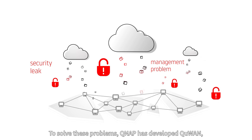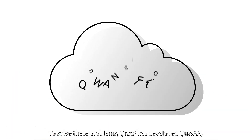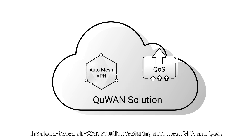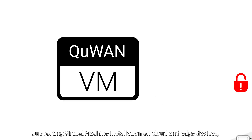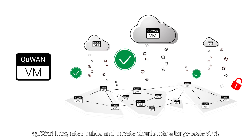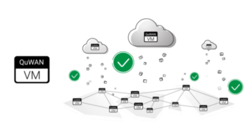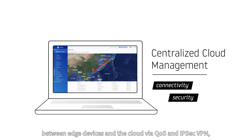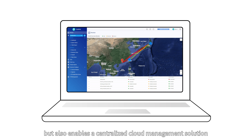To solve these problems, QNAP has developed Q-WAN, the cloud-based SD-WAN solution featuring AutoMesh VPN and QoS. Supporting virtual machine installation on cloud and edge devices, Q-WAN integrates public and private clouds into a large-scale VPN. This not only enhances connectivity and security between edge devices and the cloud via QoS and IPSec VPN, but also enables a centralized cloud management solution through cloud and on-premise data synchronization.